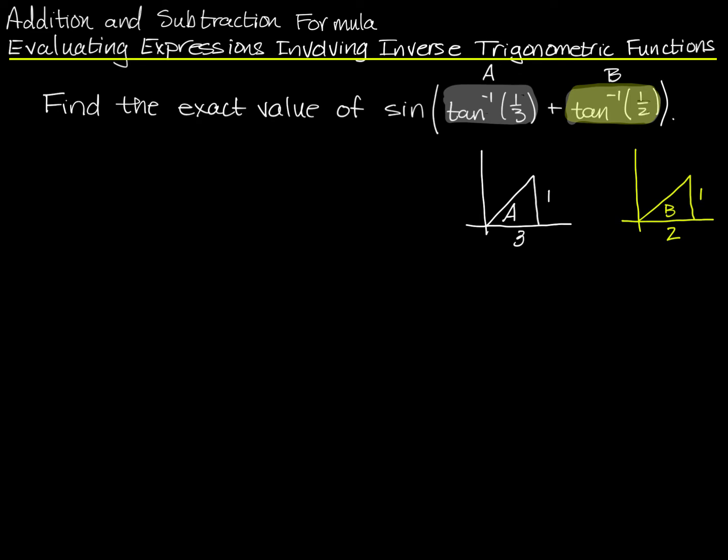What I want to find is the sine of the sum of those two angles. Well, the sine of angle A plus angle B is equal to the sine of A times the cosine of B plus the sine of B times the cosine of A.